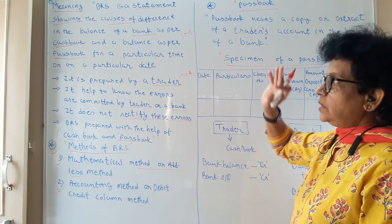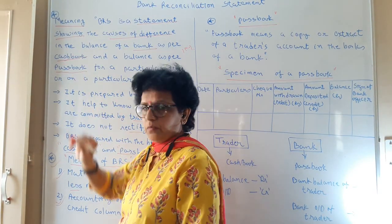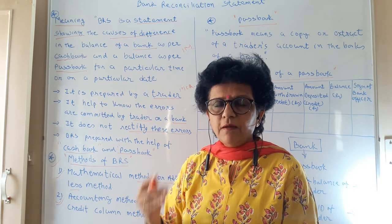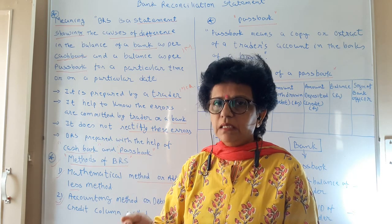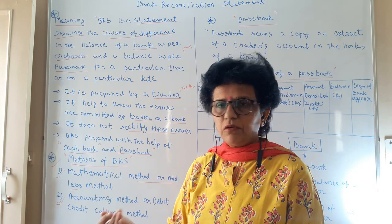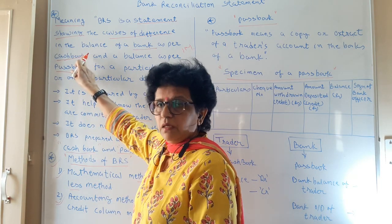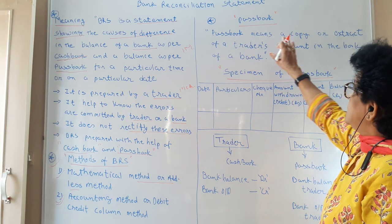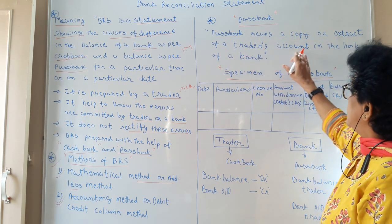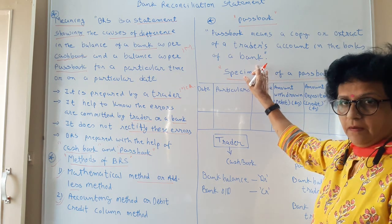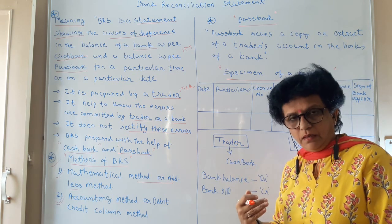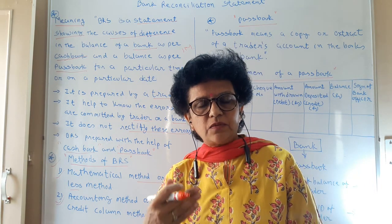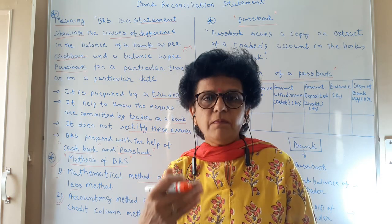You must know the two documents. One is the cash book — we have all learned the cash book. My humble request is that you revise the cash book before you start with BRS, because the concept of debit and credit in the cash book must be clear — that will help you solve BRS questions. Now, the passbook: a passbook is a copy or extract of the trader's account maintained by the bank. It is a document kept by the bank which shows all the debits as well as credits done by the trader with the bank.